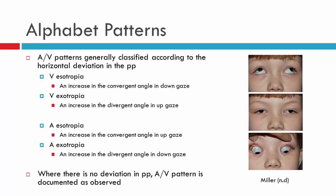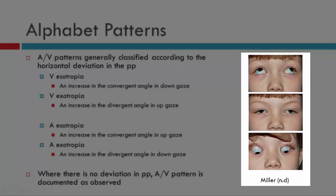With AV patterns, we classify the patient not only as having an AV pattern but more specifically as having a V-eso, V-exo, A-eso, or A-exo. The way we determine whether it's a V-eso or V-exo, for instance, is based on the deviation in primary position. If we look at the child to the right, there is an exo deviation in primary. So whatever pattern we find — whether A or V — will be subclassified as the pattern plus the deviation in primary. This patient has a V-pattern, the exo increases in up gaze and decreases in down gaze, classifying this patient as having a V-exo.